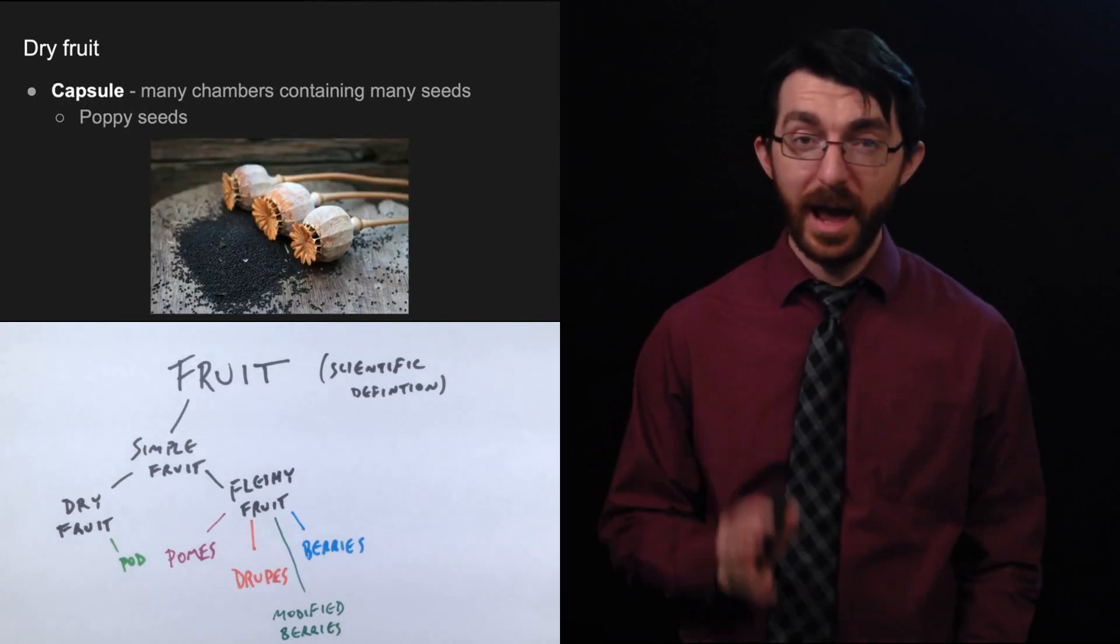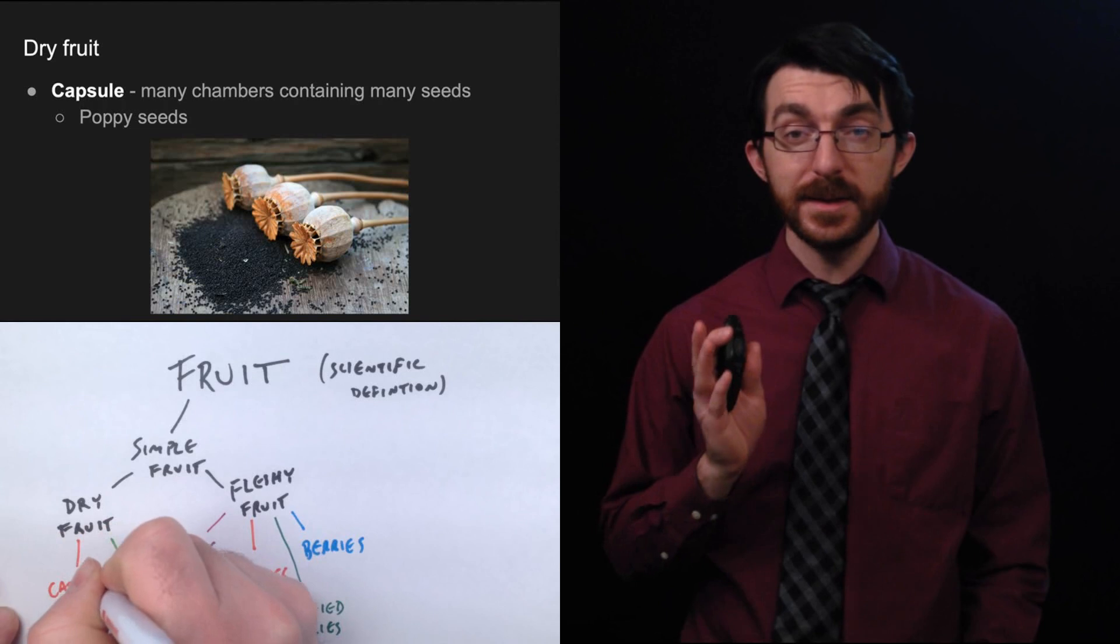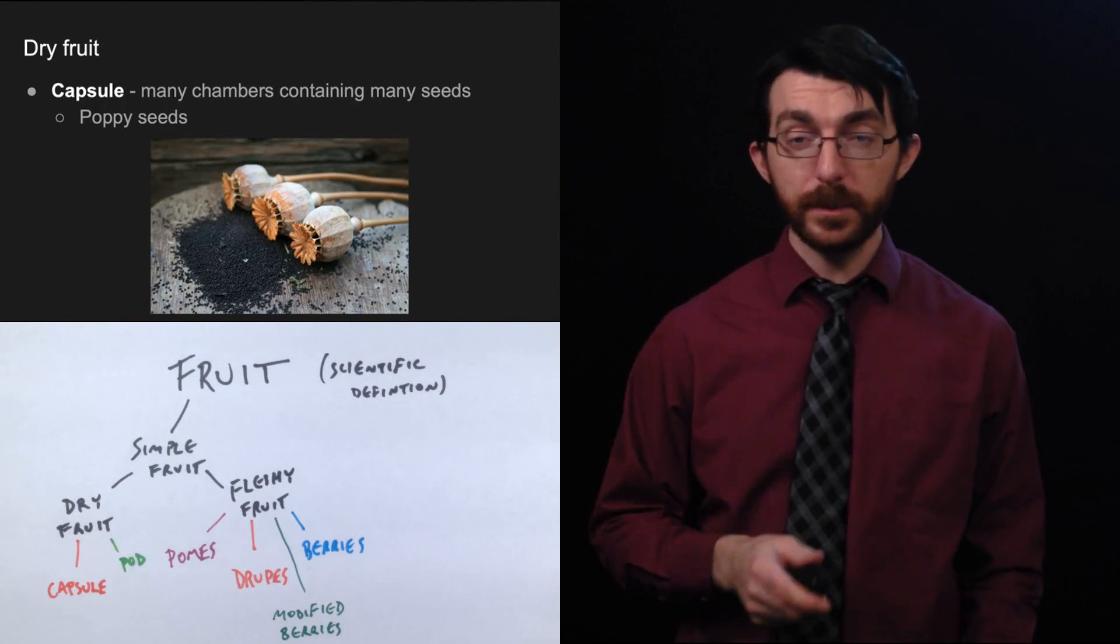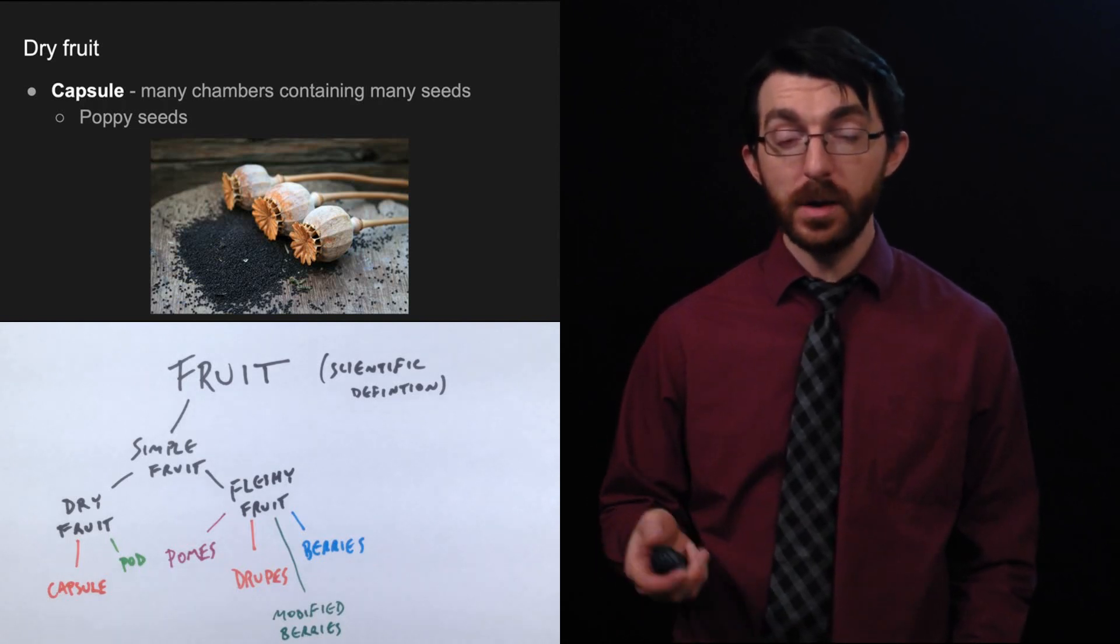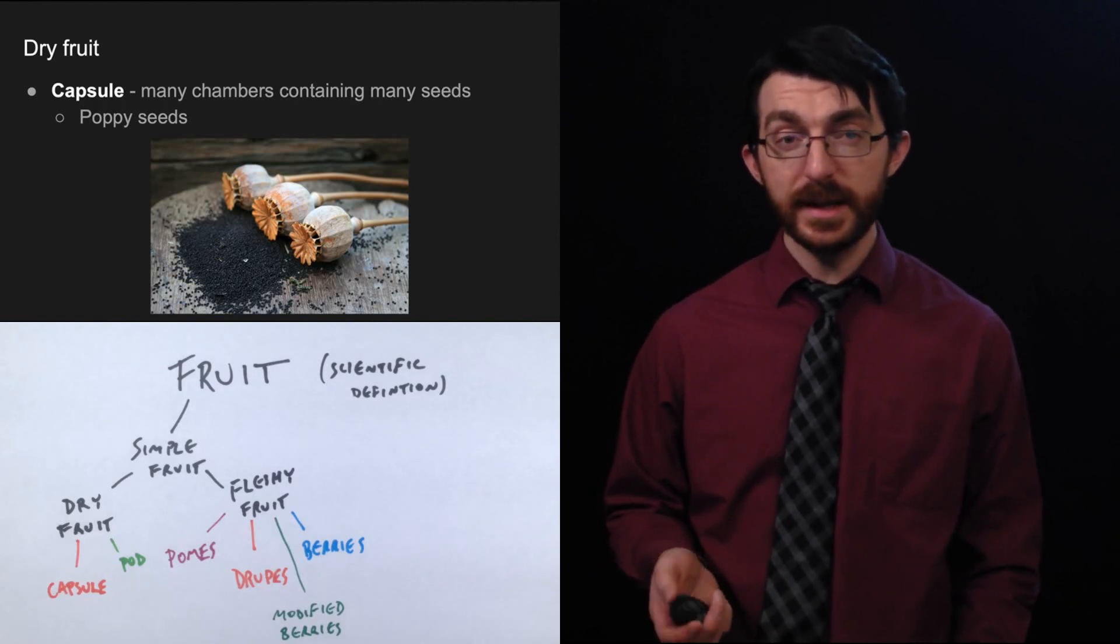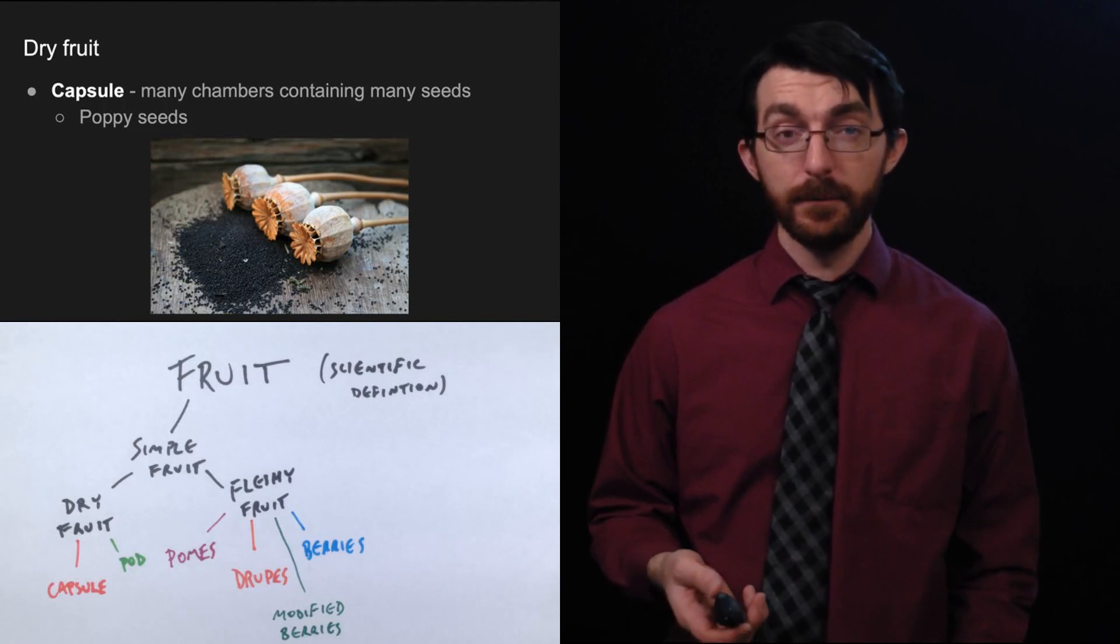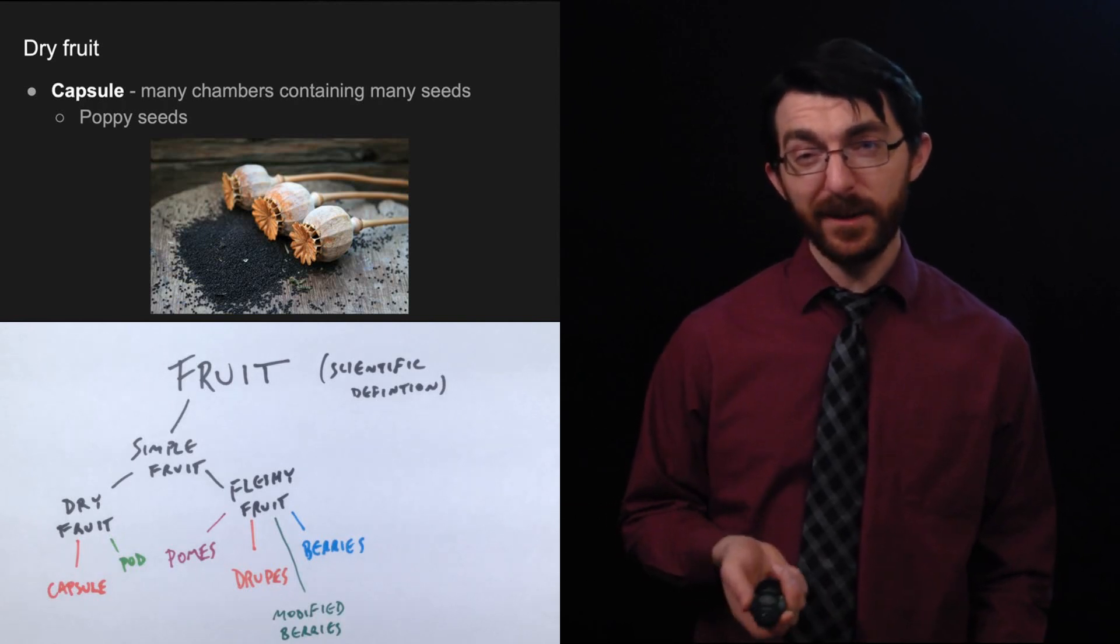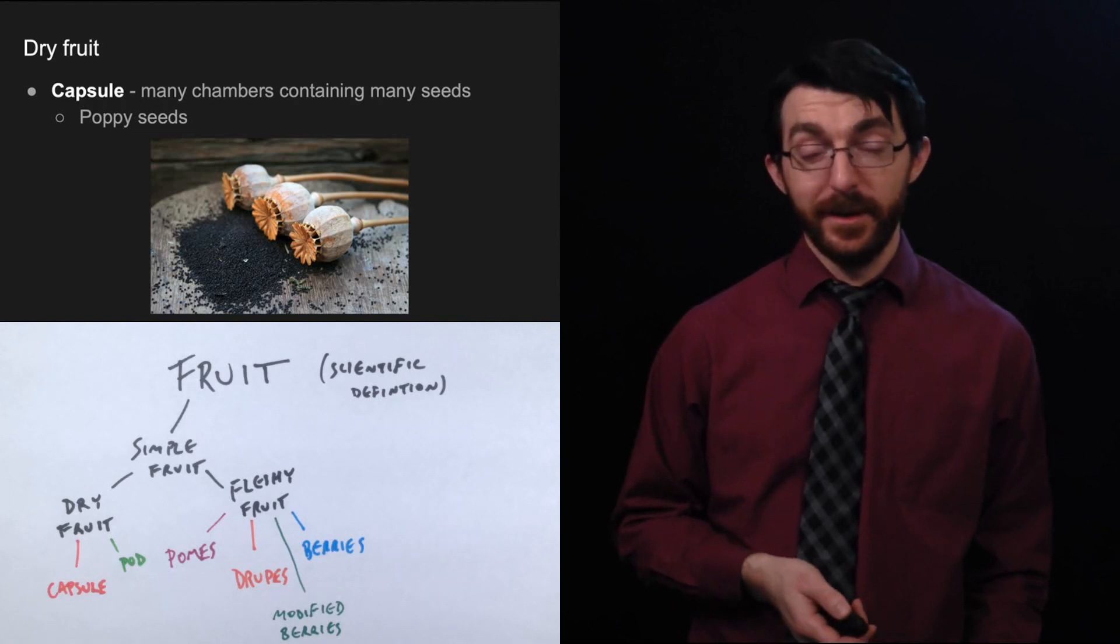Back to the science. Next category of dry fruit is a capsule. So a capsule is a matured transformed ovary that contains many chambers containing many seeds. Good example of those would be poppy seeds. Now you probably see poppy seeds in a container or maybe just like on a bagel. They do come from flowers. They come from a poppy flower. And when the flower is matured and it's developed its seeds, it looks like that in that picture. Those just contain a whole bunch of poppy seeds. And even though I would not want to eat that at all, that's technically a fruit because it's a transformed ovary containing mature seeds.